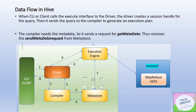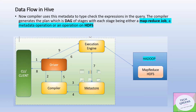In detail: you submit a particular query — some read/write command through the CLI or client. The driver creates a session handler for that particular query, and through that session handler the query is sent to the compiler to generate an execution plan. The compiler then interacts with the Metastore by calling an API called 'get metadata', and the Metastore responds with the metadata information back to the compiler. The compiler then uses this metadata information to check the expression in the query, and finally an execution plan is created in the form of DAG stages.